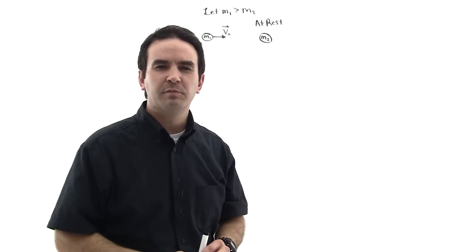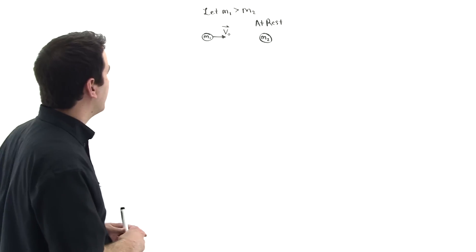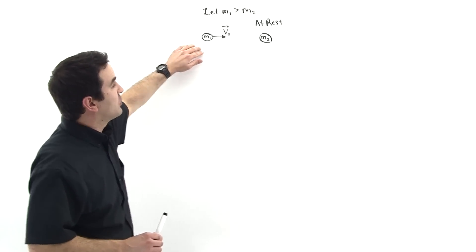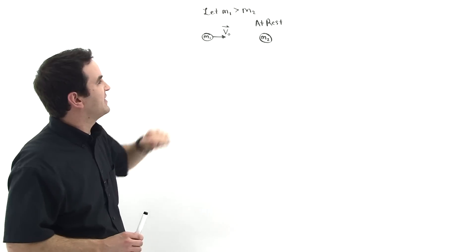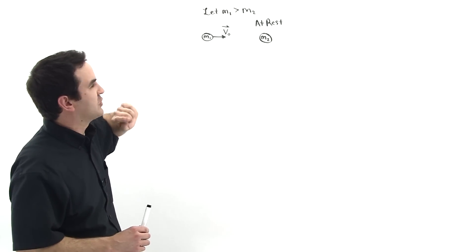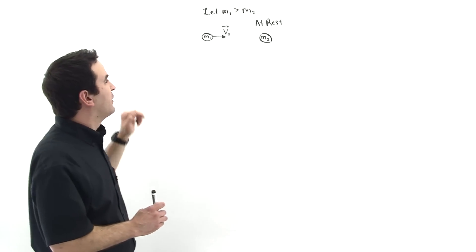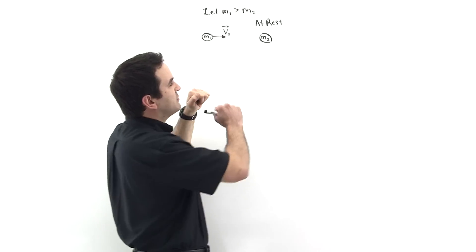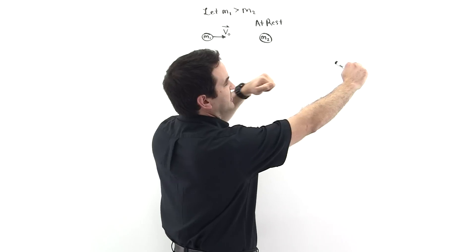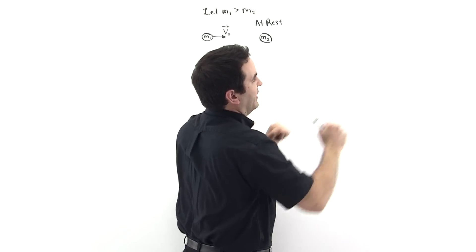Let's apply impulse and momentum to this two-particle system. Particle M1 is coming towards M2 and is going to smash into it. M1, we're told, is greater than M2, so whenever it smashes into M2, M2 is going to go flying off this way and M1 is going to barrel through it and follow behind it.